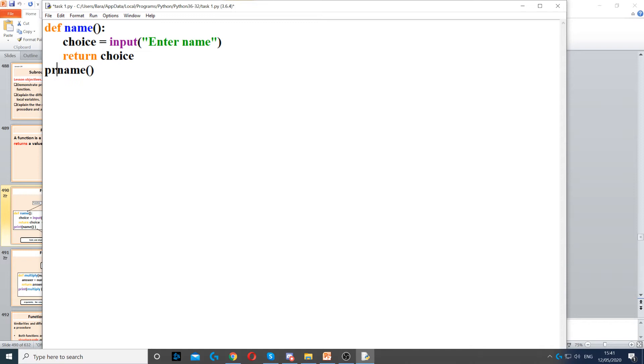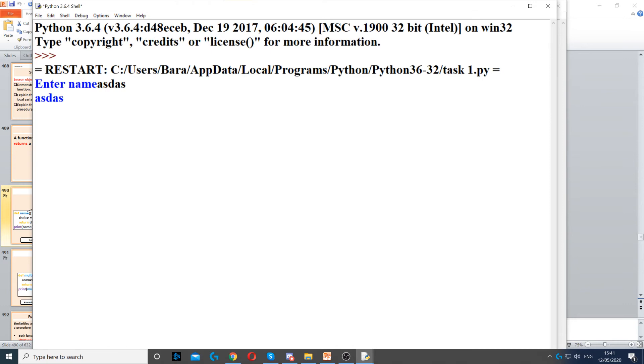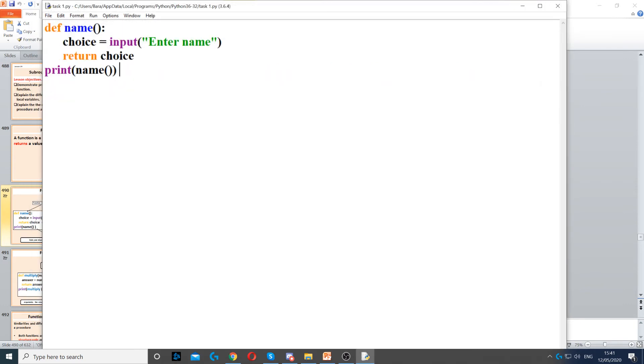If you put print name, this will run the function and also display the value of the return, of whatever is being returned inside the function. So this is one of the few differences between a procedure and a function.